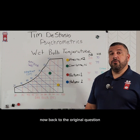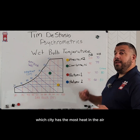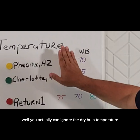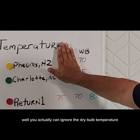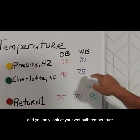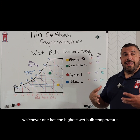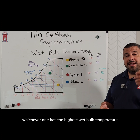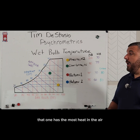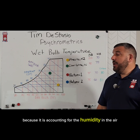Now back to the original question: which city has the most heat in the air? Well, you can actually ignore the dry bulb temperature and only look at your wet bulb temperature. Whichever one has the highest wet bulb temperature has the most heat in the air, because it is accounting for the humidity in the air.